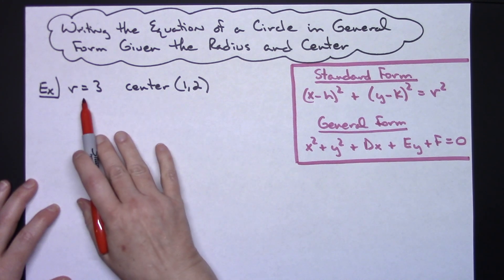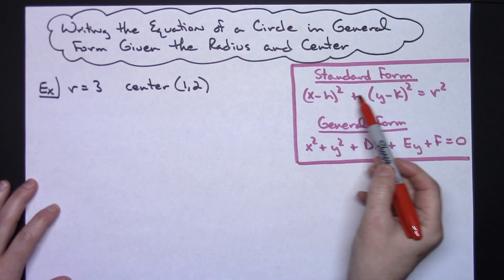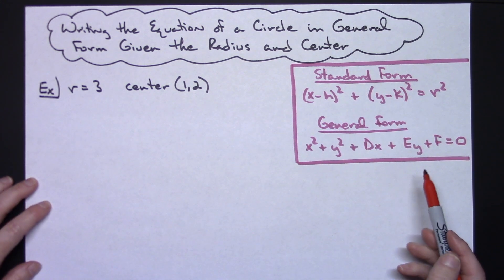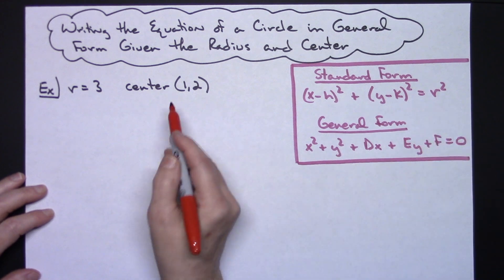Since we are given the center and the radius we're going to start with standard form and then convert it into general form. So from here I'm going to follow this formula here.